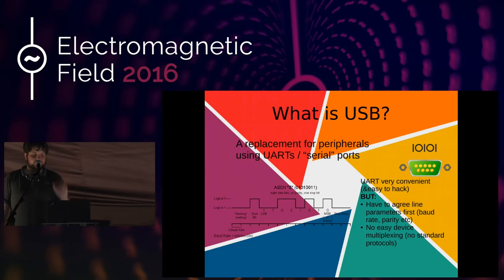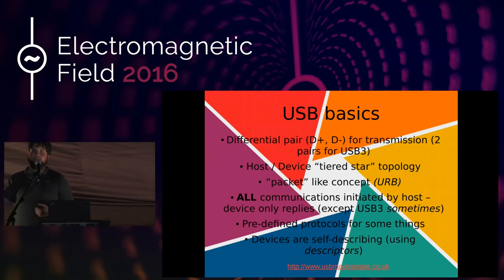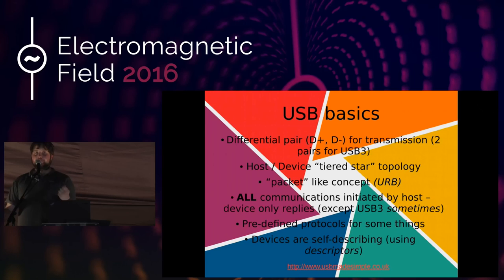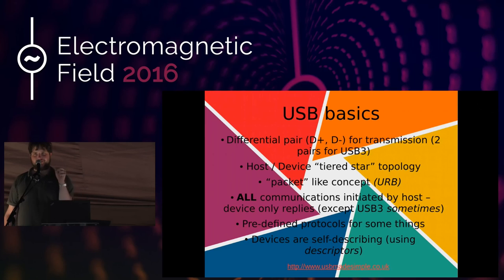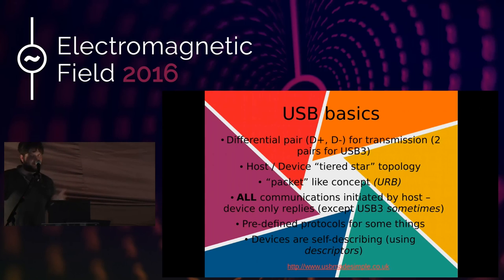USB is basically a differential pair — data plus, data minus — for data signaling. USB 3 has other pairs as well, but we won't get into that. It's a fast differential pair, but it's literally just a pair of wires for data, just like a UART, except not quite. USB is a differential pair which is half duplex, so a USB line can only ever transmit in one direction at a time. But it's just a single data pair.